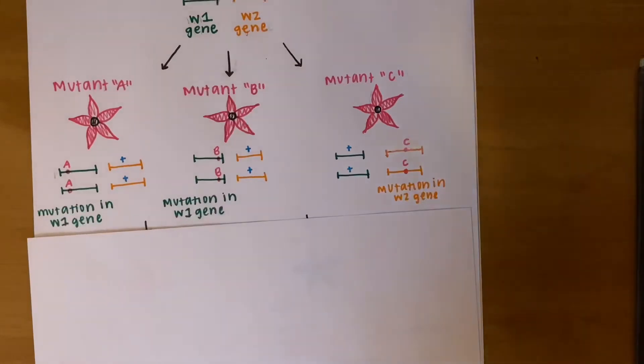All right. So, for mutant A, we see that there is a mutation in the W1 gene, the green gene, but wild type for the W2 gene. The green mutation causes the pink petals.